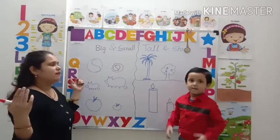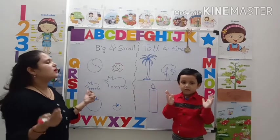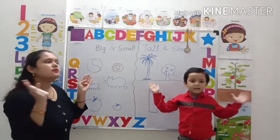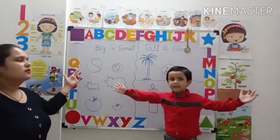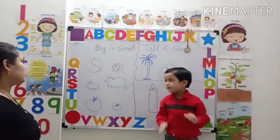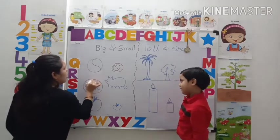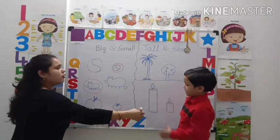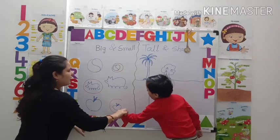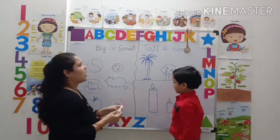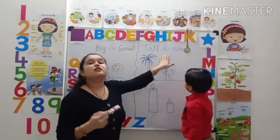Big. Small. Big. Small. Big. Small. Very good. Now we have to make a circle on the small object. You can also make a circle on the small object. Very good.